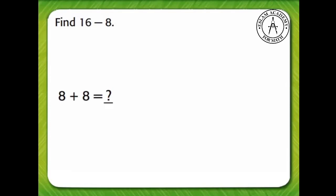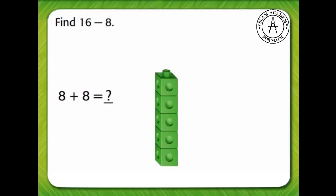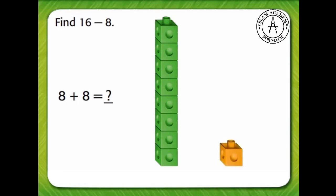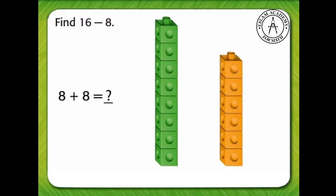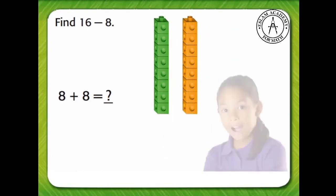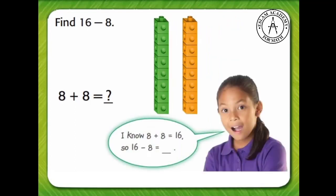Using our cubes, we count out 1, 2, 3, 4, 5, 6, 7, 8, and 1, 2, 3, 4, 5, 6, 7, 8. I know 8 plus 8 equals 16, so 16 minus 8 equals 8.